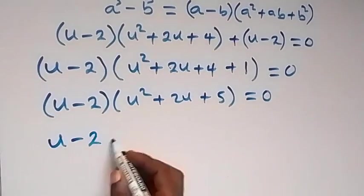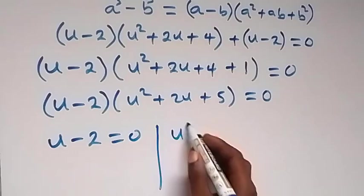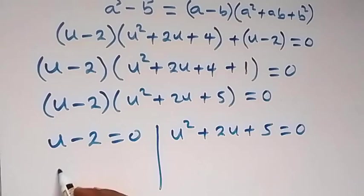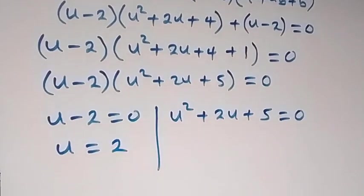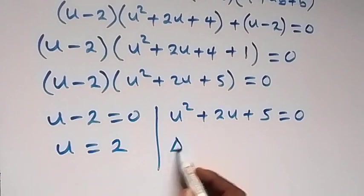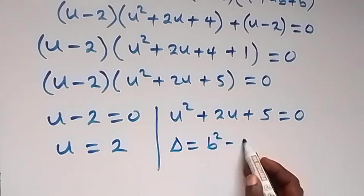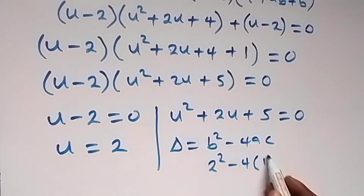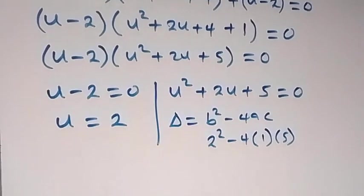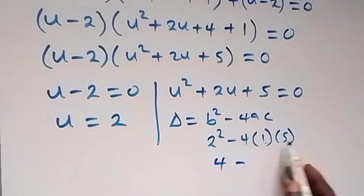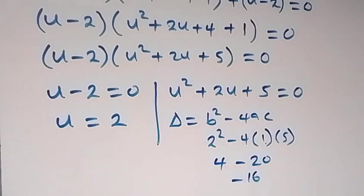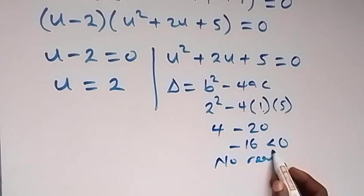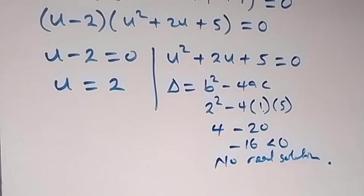This gives u − 2 = 0 or u² + 2u + 5 = 0, so u = 2, or we check the discriminant b² − 4ac for the quadratic. Here b = 2, a = 1, c = 5. The discriminant is 4 − 20 = −16, which is less than 0. That means there is no real solution from the quadratic, so u = 2 is the only real solution.